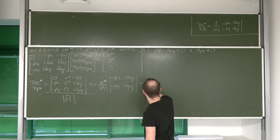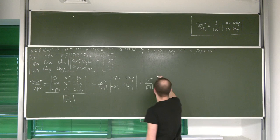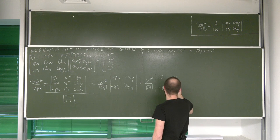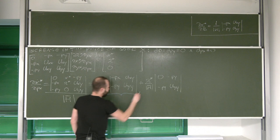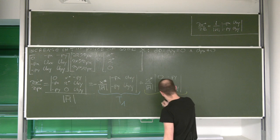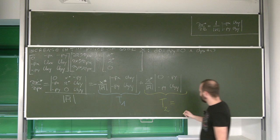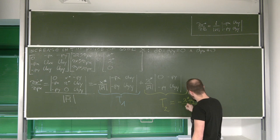We're going to get lambda here, divided by the bordered Hessian. Now if we use Laplace expansion on this, we're going to get: zero, negative Py, negative Py, Uyy. We're going to be working with those two expressions because, as it turns out, they have very specific economic interpretations. This part we're going to call Term 1, and this part we're going to call Term 2.